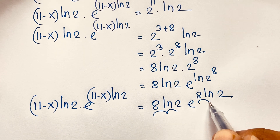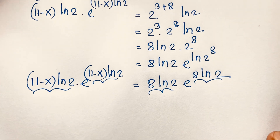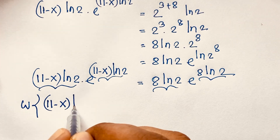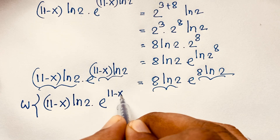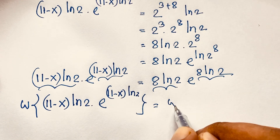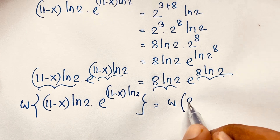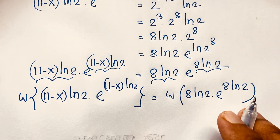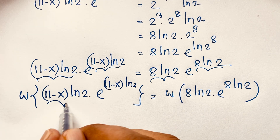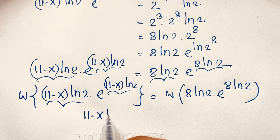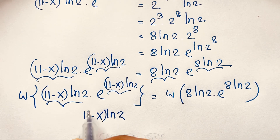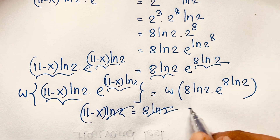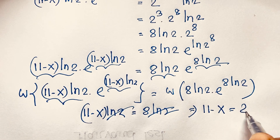So we now have (11−x) times ln 2 times e to the power of (11−x) times ln 2, equals 8 ln 2 times e to the power of 8 ln 2. Applying the Lambert W function to both sides — since W(a·e^a) = a — the ln 2 terms cancel out, and we find 11 minus x equals 8.